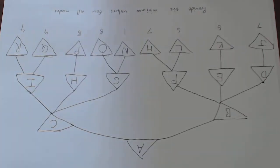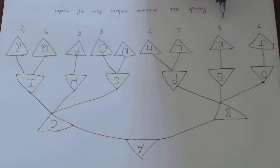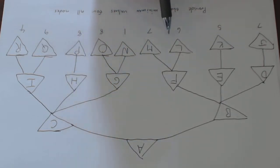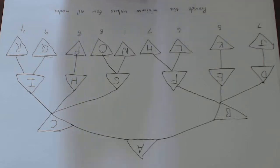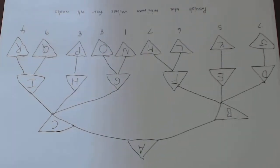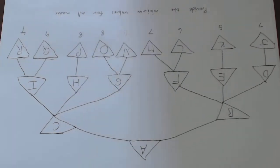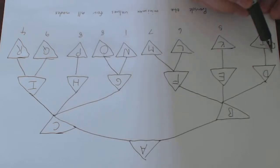We've been given the utility function of the end nodes, so we can see k has a utility value of five, and so on.